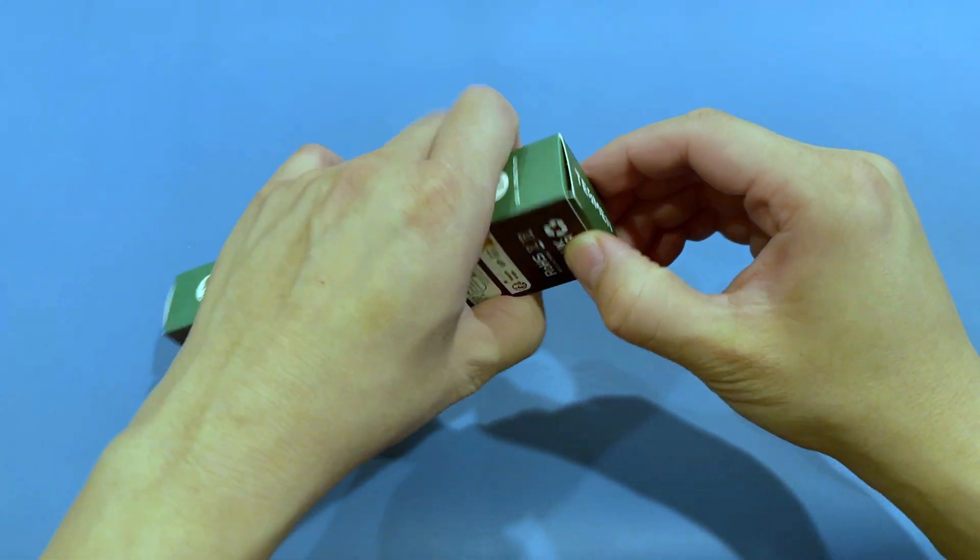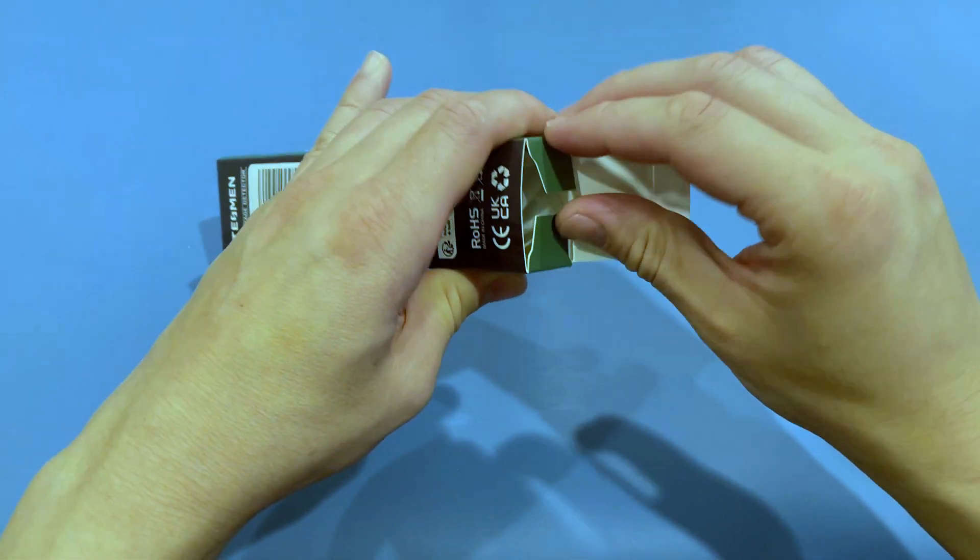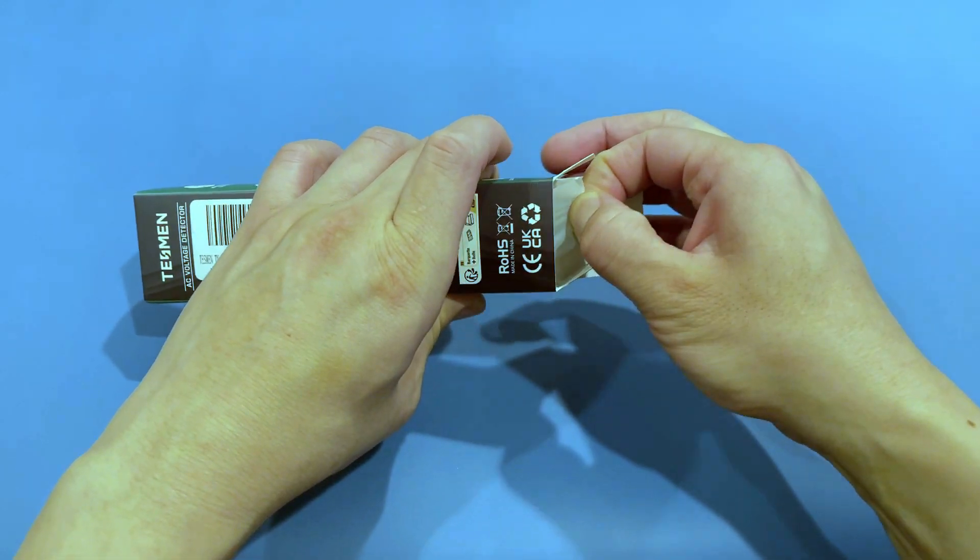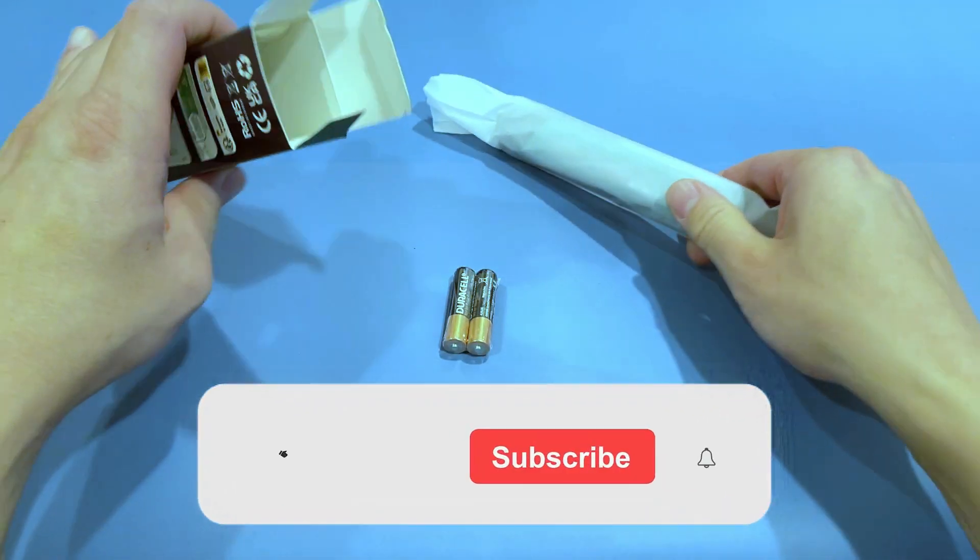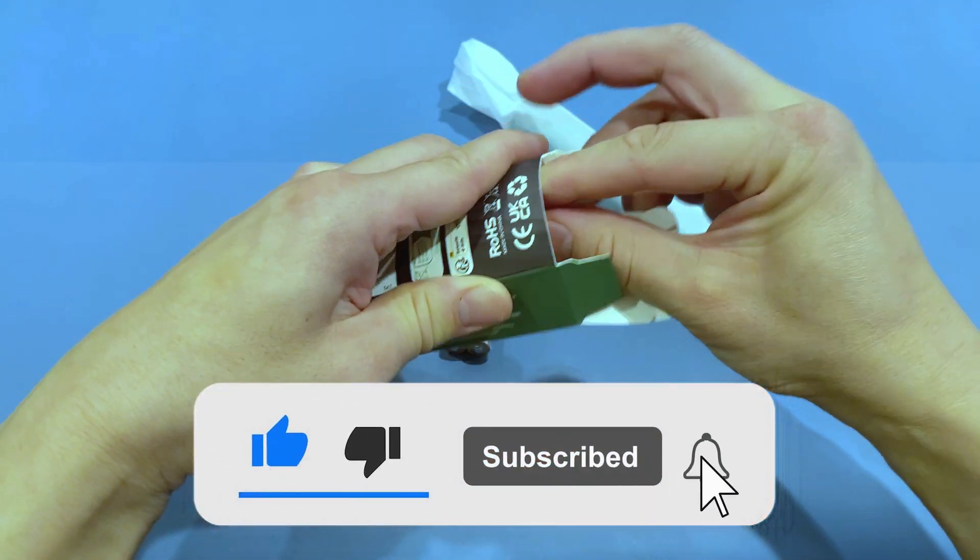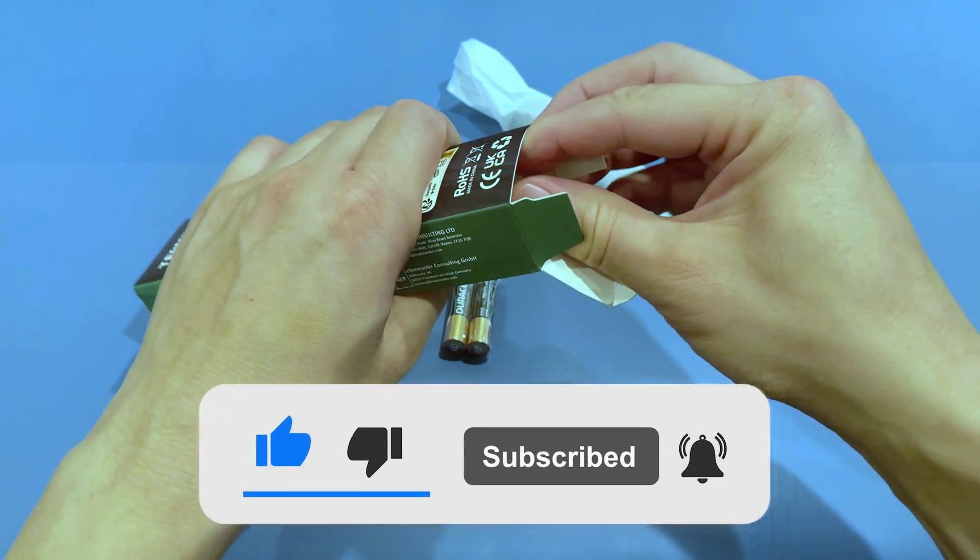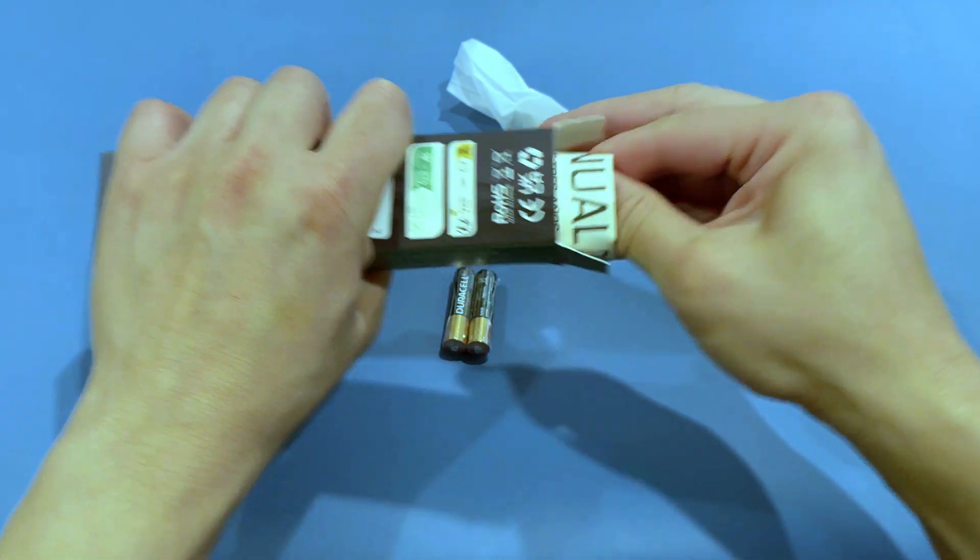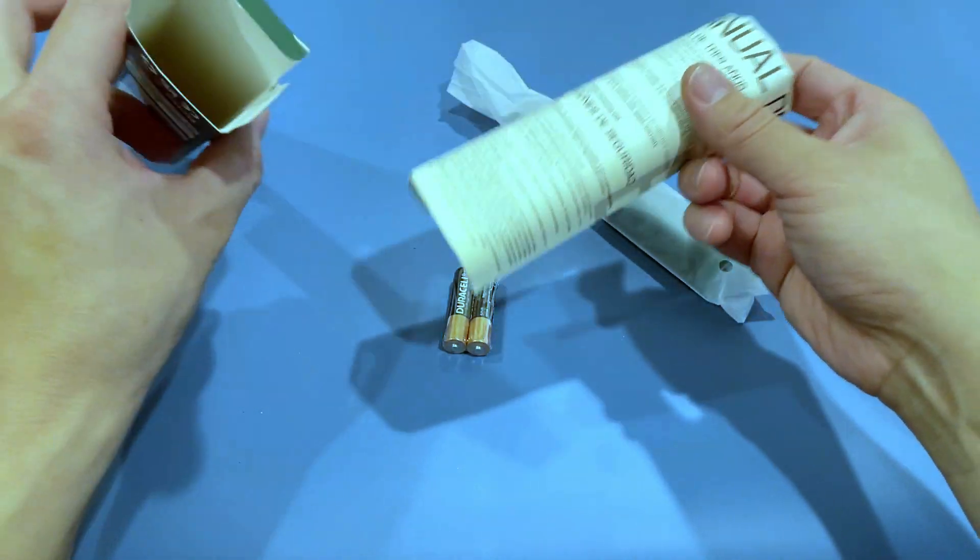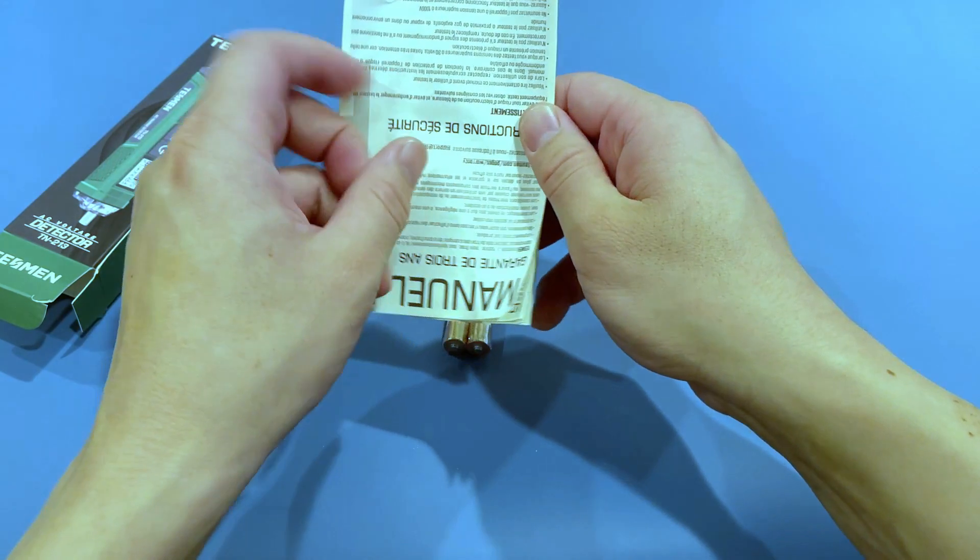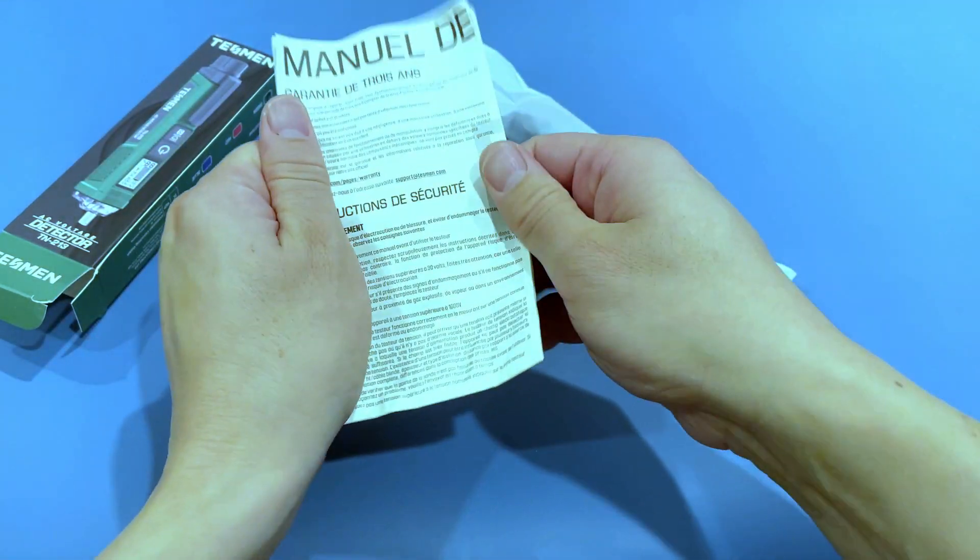Let's start by unpacking it and turning it on. Many things come in the box. In the box we have a voltage tester, batteries which is great because we don't need to buy them separately, and an instruction manual.